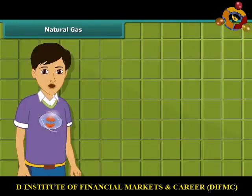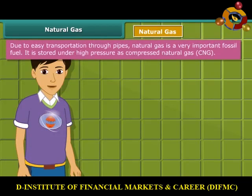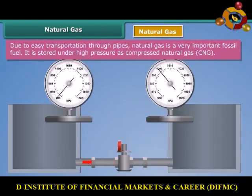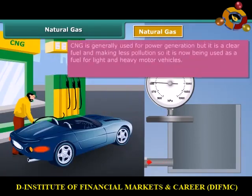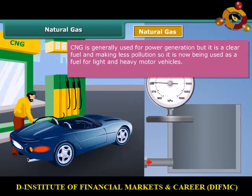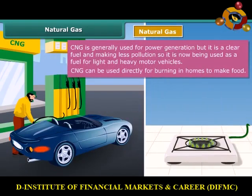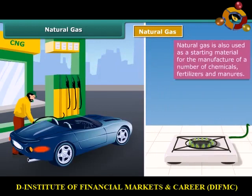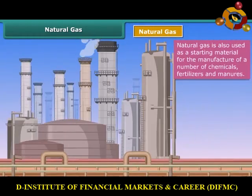Let us move on to our next exhaustible natural resource: natural gas, also known as compressed natural gas, or CNG. It is stored under high pressure as compressed natural gas. CNG is generally used for power generation, but due to being less polluting, it is also being used as a fuel for vehicles and for cooking purposes. Natural gas is also used as a base material for the manufacture of a number of chemicals and fertilizers.